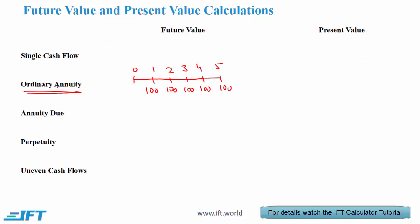Next we come to an ordinary annuity. An annuity is a series of equal cash flows that occur at regular intervals of time. With an ordinary annuity the cash flow happens at the end of each year. So if we have 5 years and the cash flow is $100, we have $100 at the end of each year for 5 years. With an interest rate of 10%, N is equal to 5, payment is 100, and we compute the future value with present value set to 0. In this case the future value is 610.51.